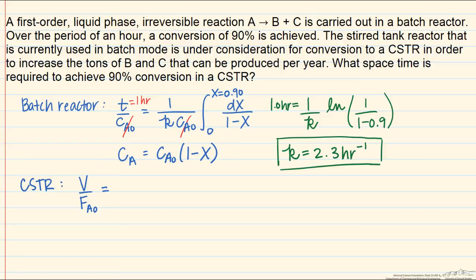We'll write that the volume of the CSTR divided by the inlet molar flow rate of component A to the CSTR can be re-expressed as the volume divided by the inlet concentration times the inlet volumetric flow rate. This V over V0 is just the space time divided by Ca0, and according to our design equation for a CSTR, that's equal to the conversion divided by the reaction rate at the final conversion in the reactor.